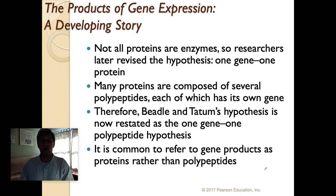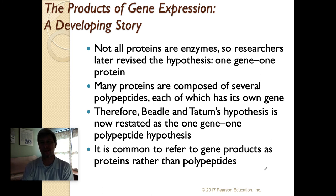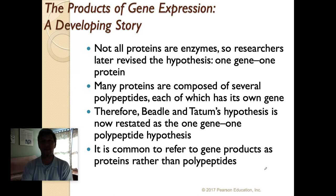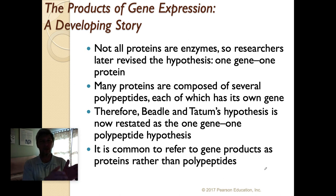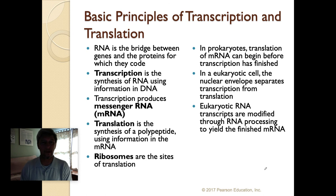Later it was realized that not all proteins are actually enzymes, so scientists revised the hypothesis to 'one gene–one protein.' That was further revised because many proteins are made of multiple polypeptides, each coded for by its own gene. So Beadle and Tatum's hypothesis evolved from one gene–one enzyme, to one gene–one protein, to what we now call one gene–one polypeptide. That's where this video ends — remember there's a second one coming up on transcription and translation.